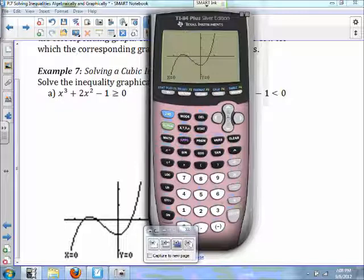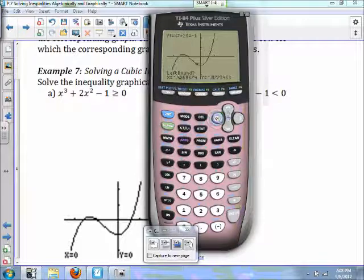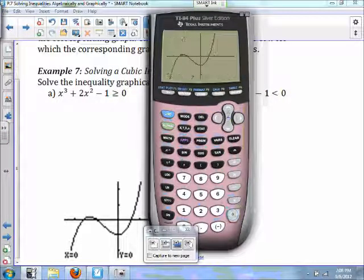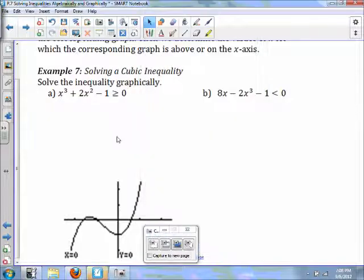So what we need to do, we need to find these three zeros. So left of my first zero, right of my first zero, so my first zero is negative 1.62.